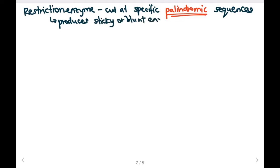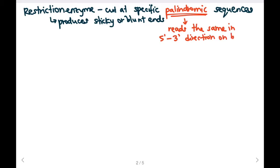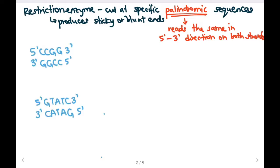A palindromic sequence is a sequence that reads the same in the 5' to 3' direction in both strands. For example, if we have two sequences of DNA, the first strand reads 5' C-C-G-G, and on the second strand it also reads 5' C-C-G-G.